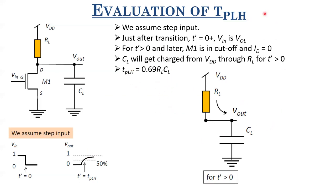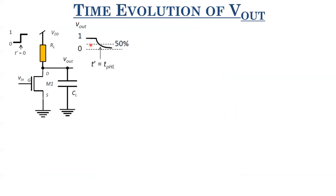Calculation of TPHL is not as trivial as TPLH because both the sourcing current from the resistor and the sinking current through the MOSFET are happening together. For TPHL, the input goes from zero to one — it is the output going from high to low in an inverter. We assume a step input: before T' = 0, the input is at VOL; immediately after, the input goes to VOH = VDD.